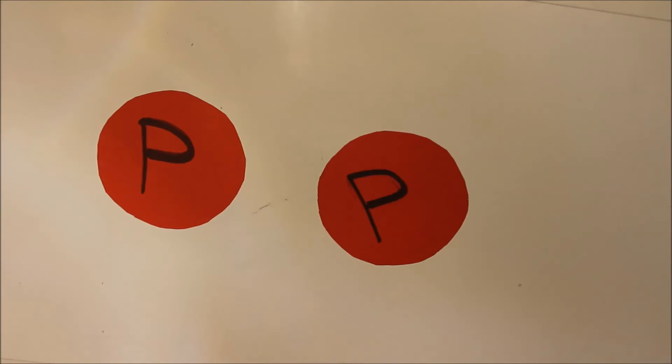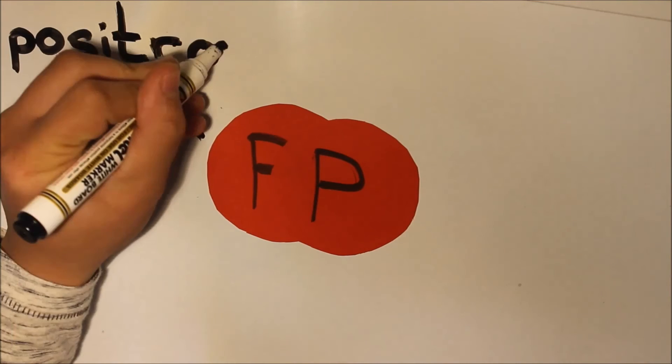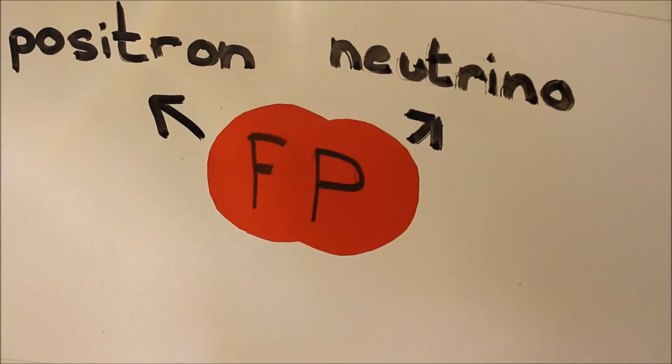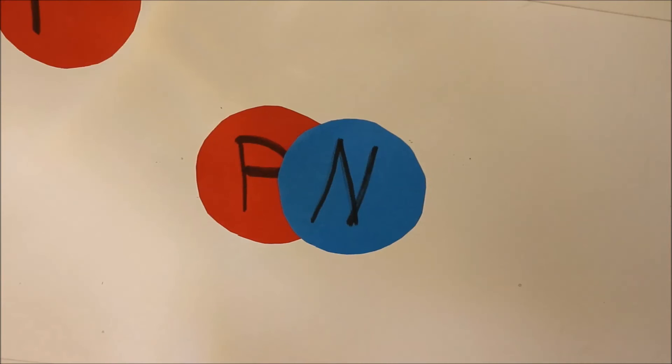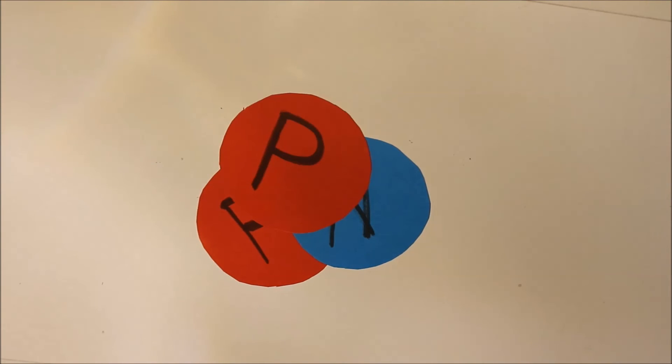When two protons collide, one of the protons actually emits a positron and a neutrino and it quickly becomes a neutron. The next thing that happens is that another proton comes smashing in where more energy is released.